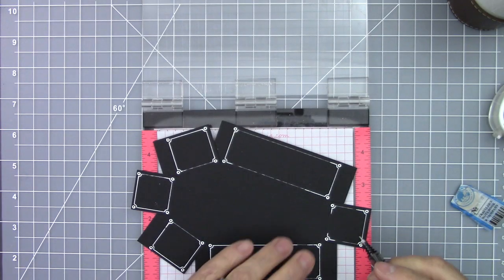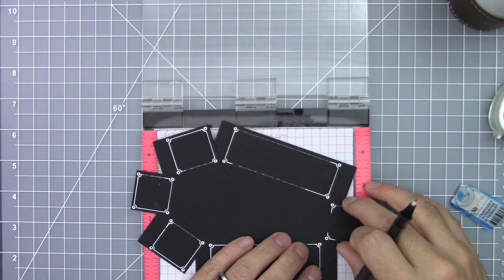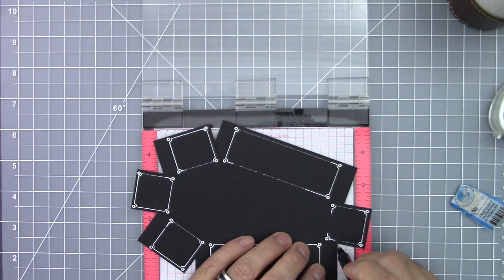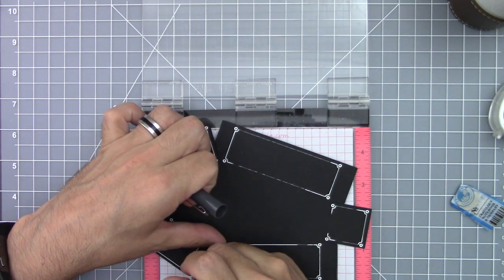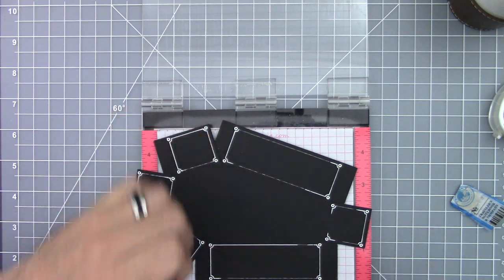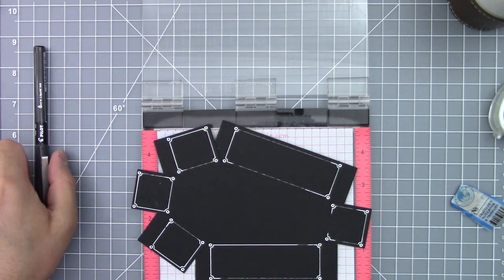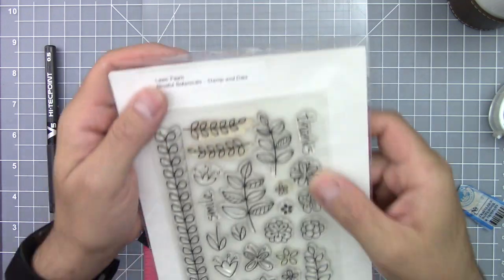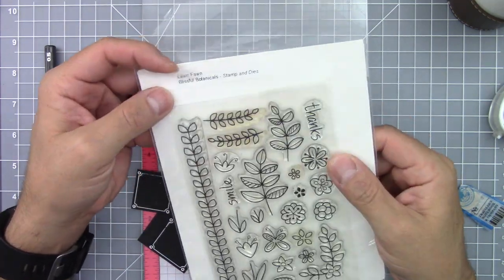Now I decided to make some stamping on the sides of the coffin. So for this I used my MISTI. And using the paper grid on the MISTI, I marked the sides of the coffin to make sure I would stamp the other sides on the same spot.